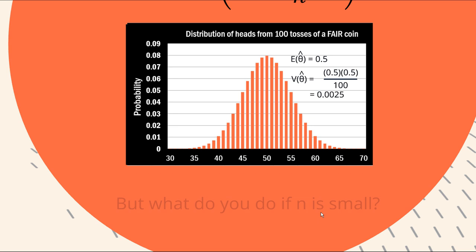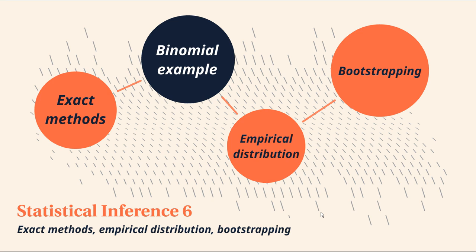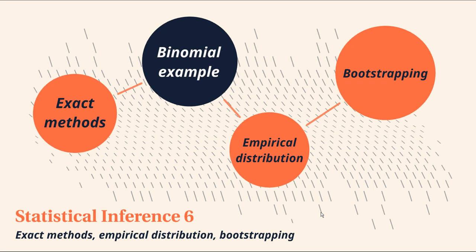So the question is, what do you do if n is small? So in those first few figures I was showing before, we wouldn't be able to use that variance calculation. So how do you do it? Let's have a look at an example here, a binomial example. This one's to do with prevalence of anxiety in teenagers.